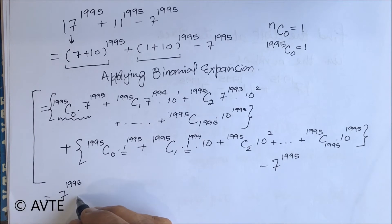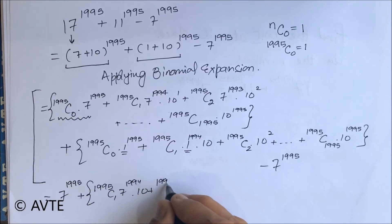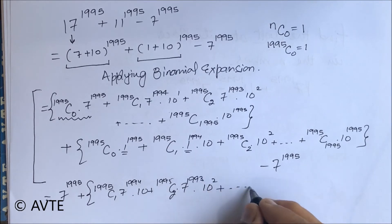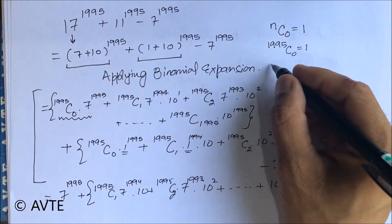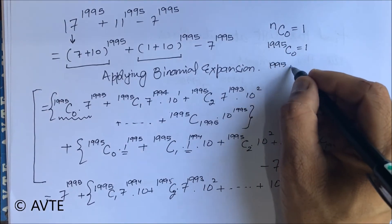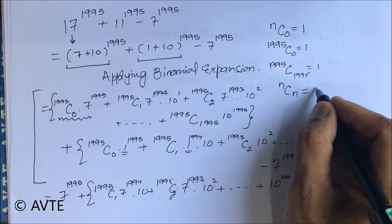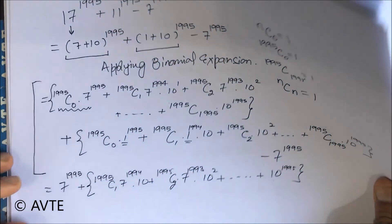So we are now left with this and I'm writing all the terms again. So 1995C0 will be 1 because there is another property that nCn is equal to 1. So I have directly written 10 raised to power 1995 plus the other terms.